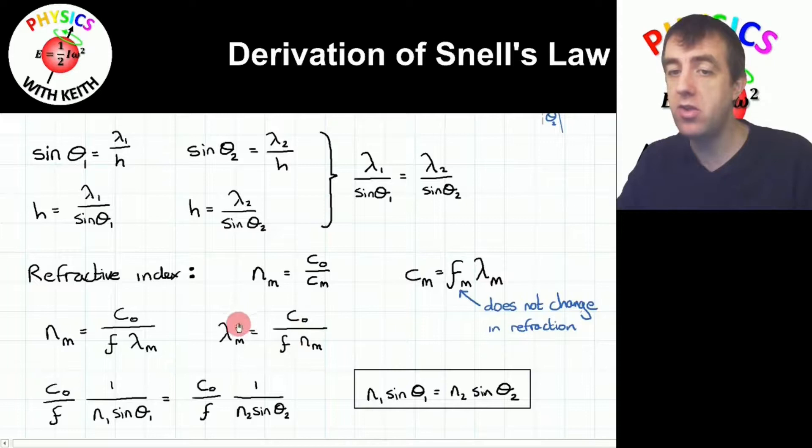Rearranging this equation to get the wavelength as the subject, we get this expression here. I can now substitute this expression into our equation up here, where m can take the value 1 or it can take the value 2 for the two different media. Substituting this expression into here gives us this expression here. I've separated out the C nought over F because C nought and F is the same for both media. C nought is the speed of light in a vacuum, so it's independent of the medium. And F is the frequency, which, as we've discussed before, does not change as the wave passes through that boundary.